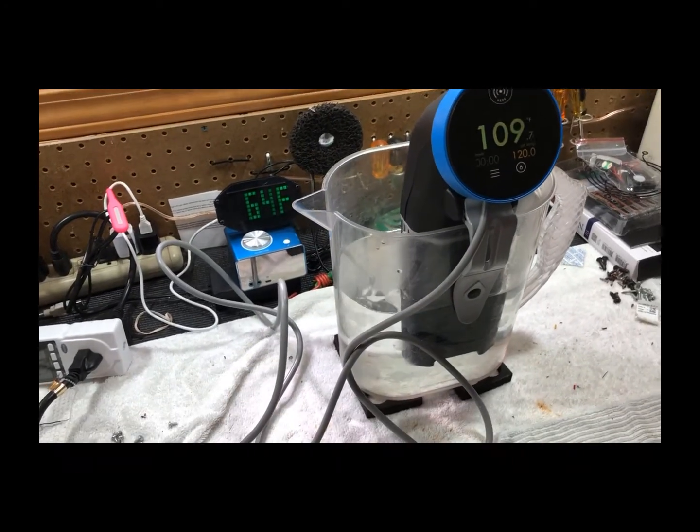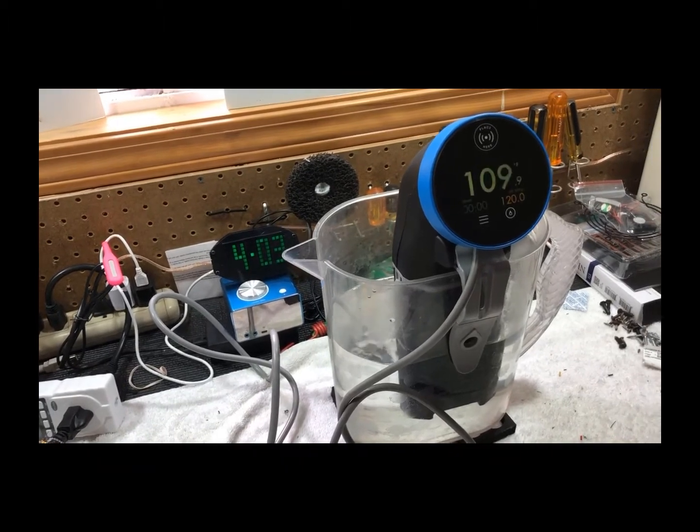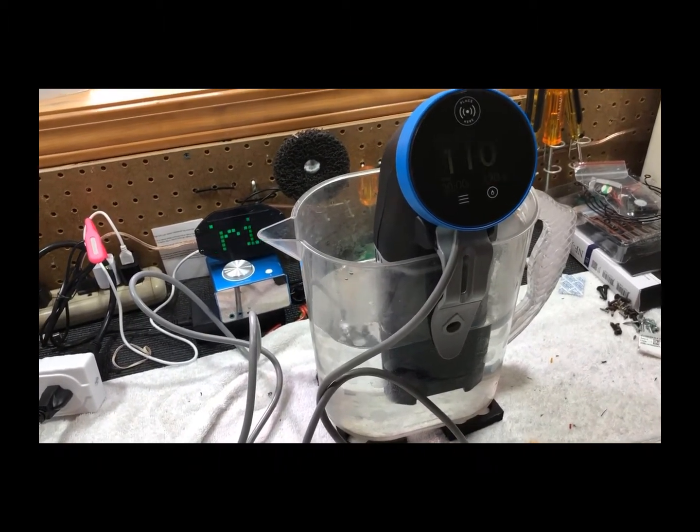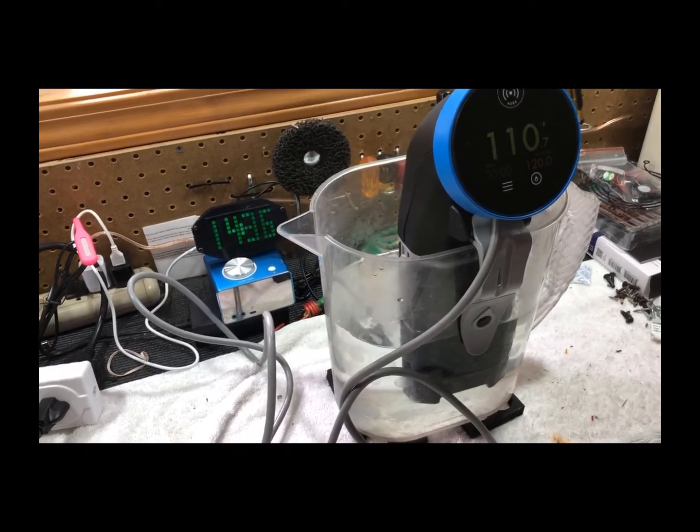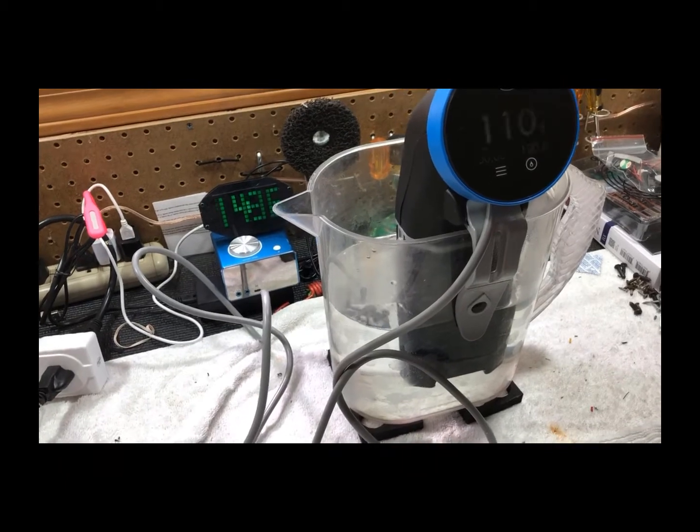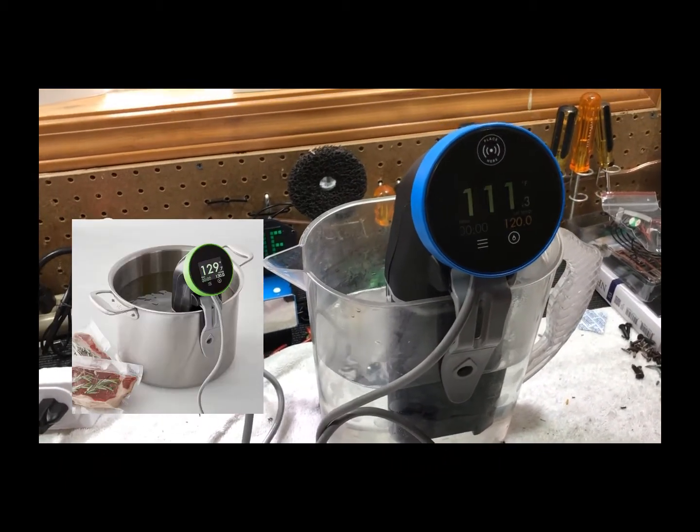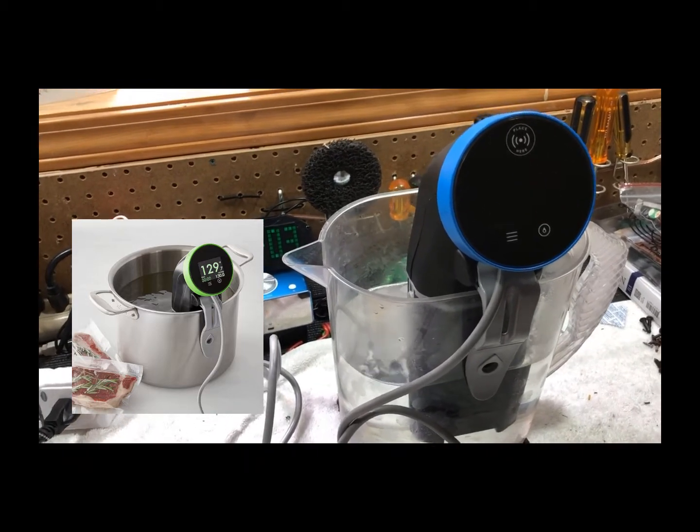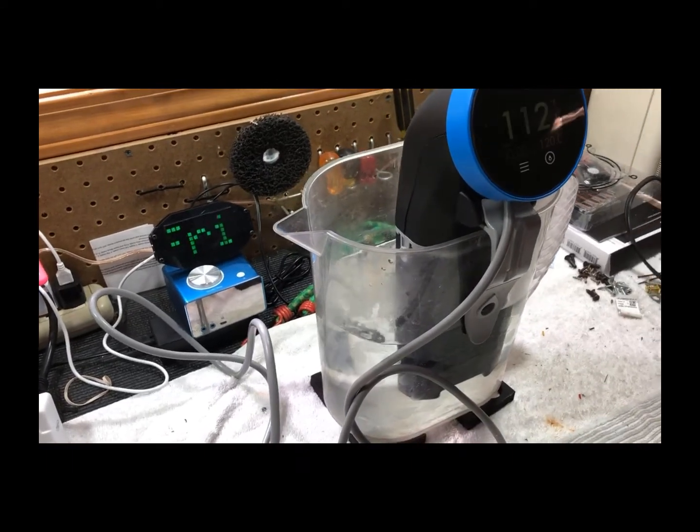On the bench today we have a Nomiku 10,000. It's a sous-vide machine which basically is a way to cook your food in a vacuum-packed pack. You put it in a pot of water and you set this thing to the temperature that you want the food to cook to, and it will get to that temperature and hold that temperature while circulating the water.